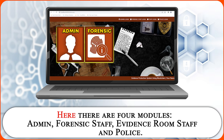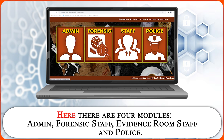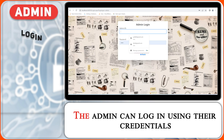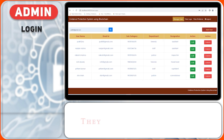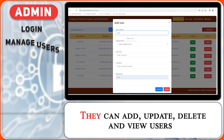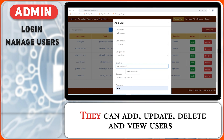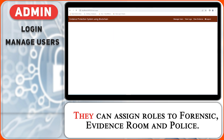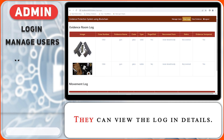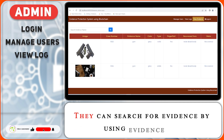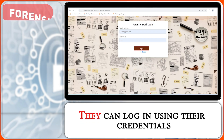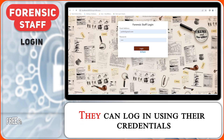Admin, forensic staff, evidence room staff, and police. The admin can log in using their credentials. They can add, update, delete, and view users. They can assign roles to forensic, evidence room, and police staff. They can view the login details and search for evidence using an evidence ID.